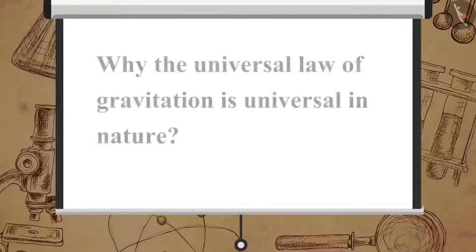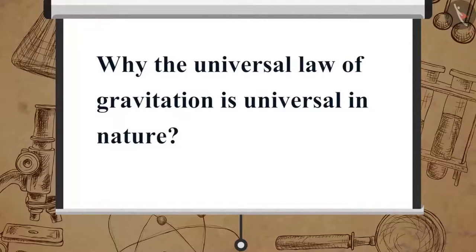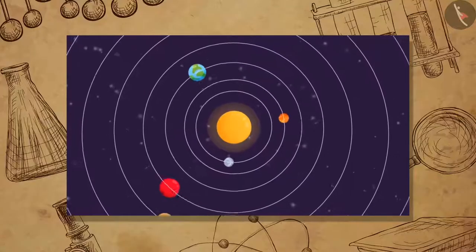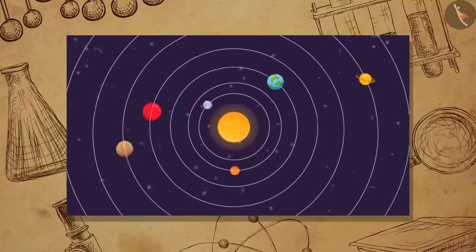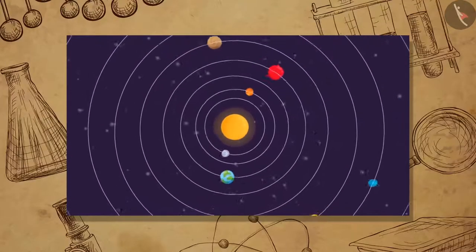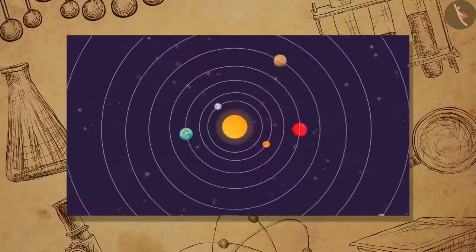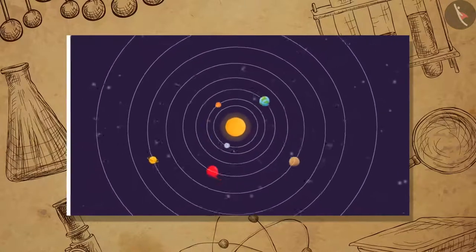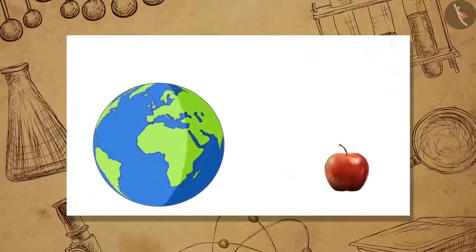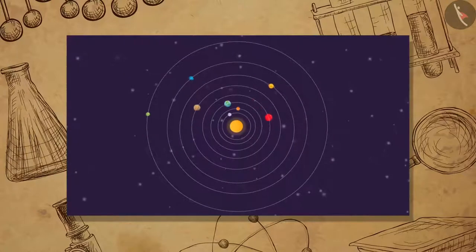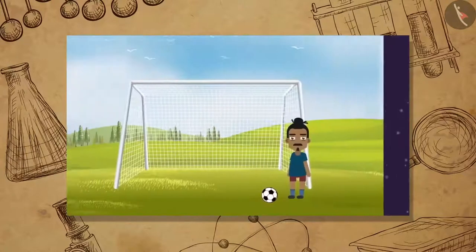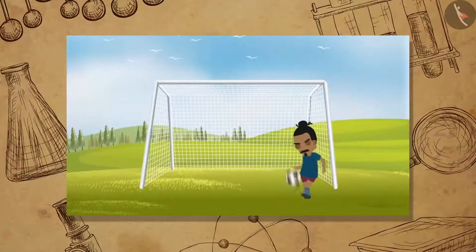Can you tell why the universal law of gravitation is universal in nature? It is because the law is applicable to all the bodies in the universe. Whether the bodies are big or small, whether terrestrial or celestial, the law applies to all.